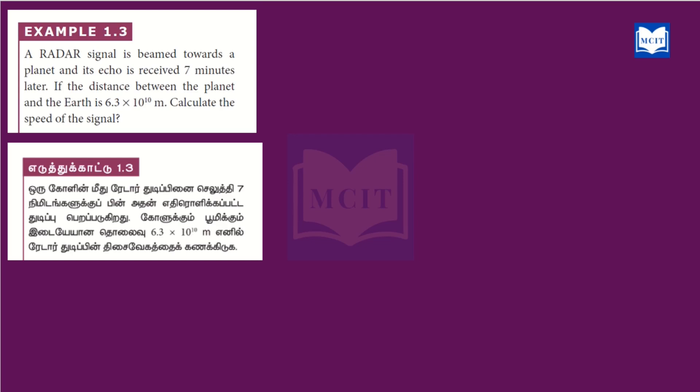In this video we will talk about question 1.3. Both English medium and Tamil medium students will be covered. The problem: a radar signal is beamed towards a planet, and its echo is received 7 minutes later. If the distance between the planet and Earth is 6.3 into 10 power 10 meters, calculate the speed of the signal.